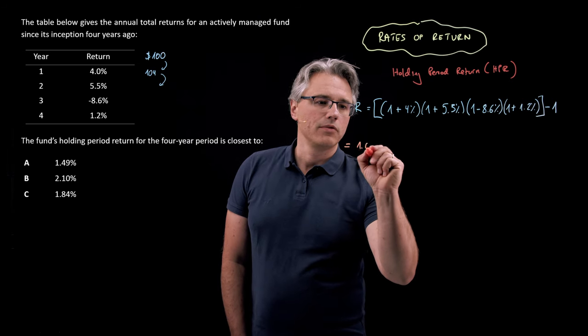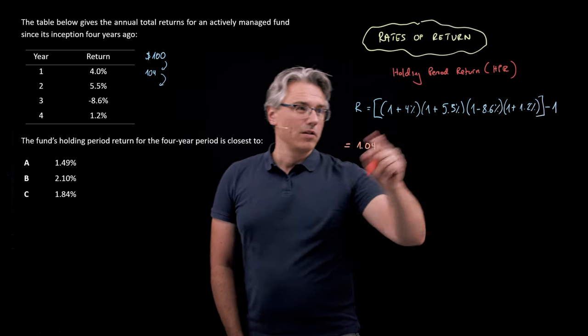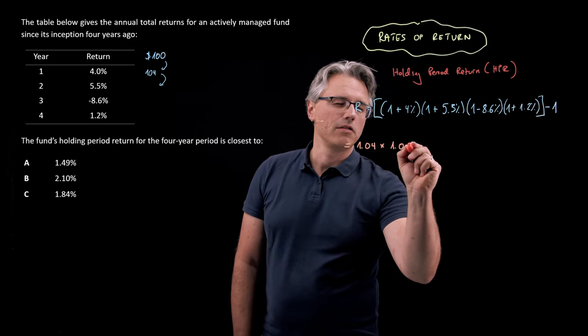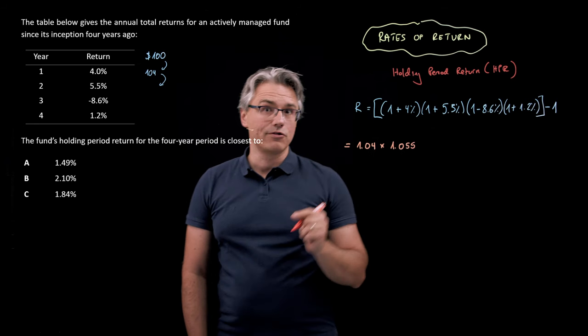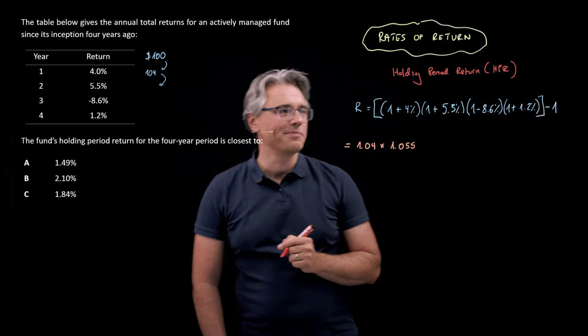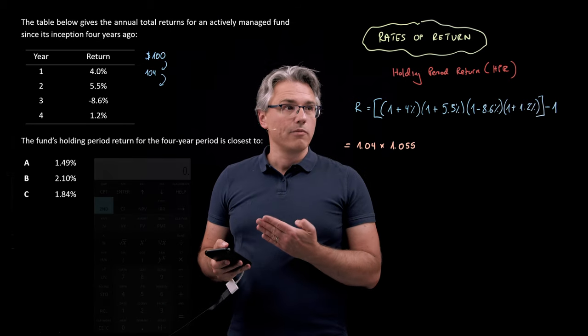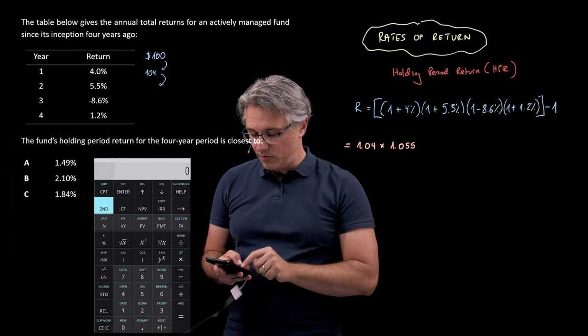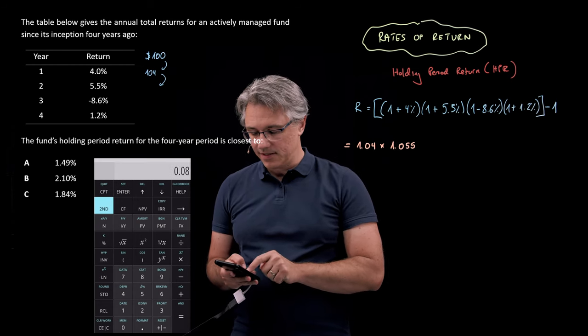In terms of calculator inputs, that gives 1.04 times 1.055. The next one is tricky because you need to deduct 8.6% from 1. So 1 minus 0.086 gives 0.914. Many people make a mistake here, so let's get the calculators out. We have 1.04 × 1.055 × 0.914, and the final one is also tricky — many people turn 1.2% into 1.12, which is wrong. It's 1.012, since 1.12 would be 1 plus 12%, not 1 plus 1.2%.